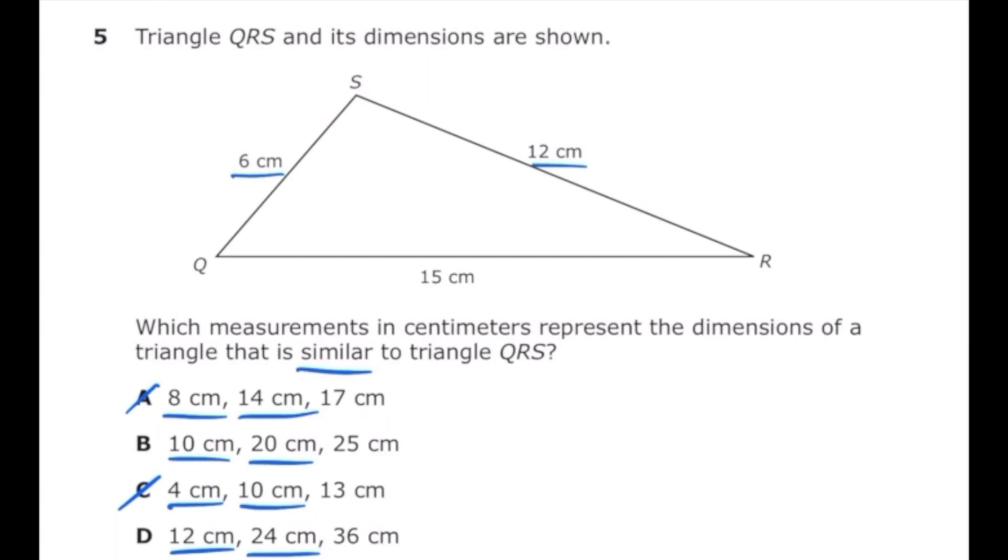How do I determine between letter B and letter D? I'm going to make a proportion. I'm going to start with the original triangle and make a fraction using these two sides: 12 over 15, and set that equal to—I'm going to start with letter B. I'll use the second and third sides just like I did in the original triangle, so 20 over 25.